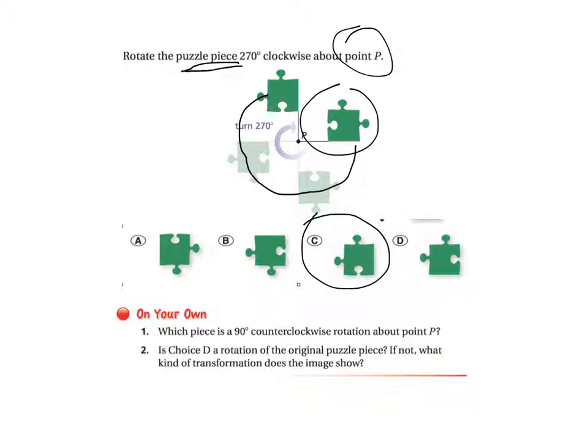Let's see how you did. Number 1 says which piece is a 90 degree clockwise rotation. Well, from the original piece to 90 degrees would be this figure. And this figure here matches exactly up with figure A. So the answer would be letter A.